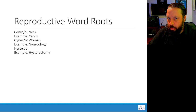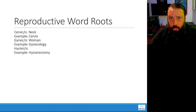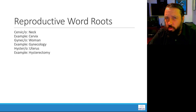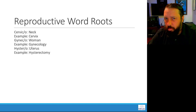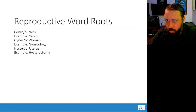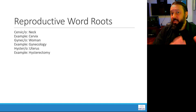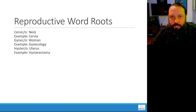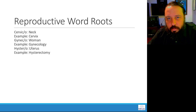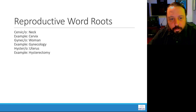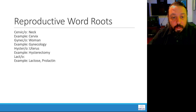Hystero means uterus. A hysterectomy is the surgical removal of the uterus. Sometimes it includes just the uterus and fallopian tubes, and sometimes it's much more extensive — a radical hysterectomy involves a lot being removed.